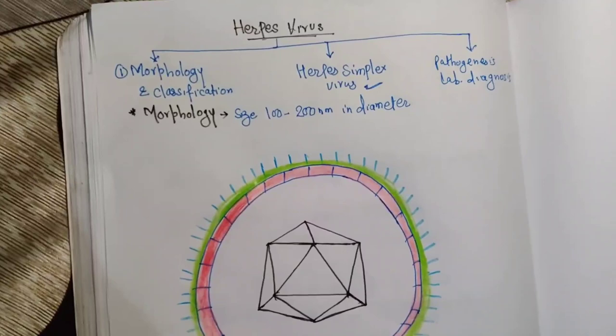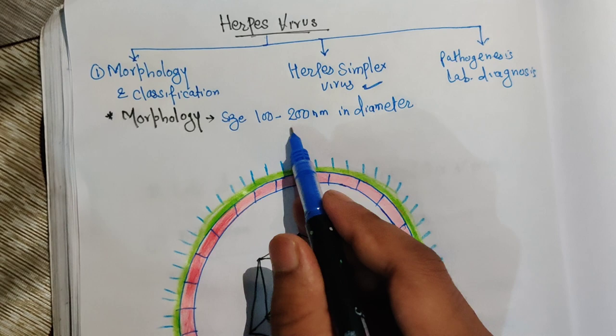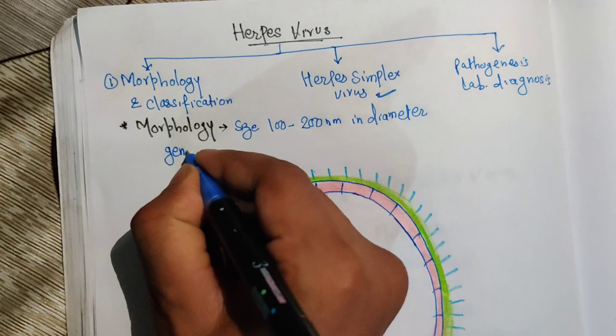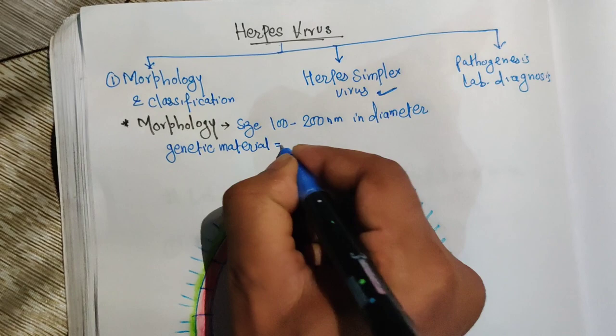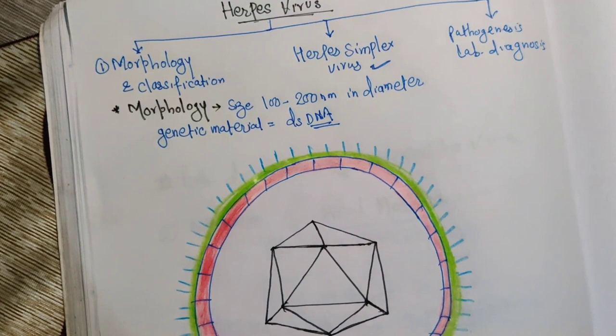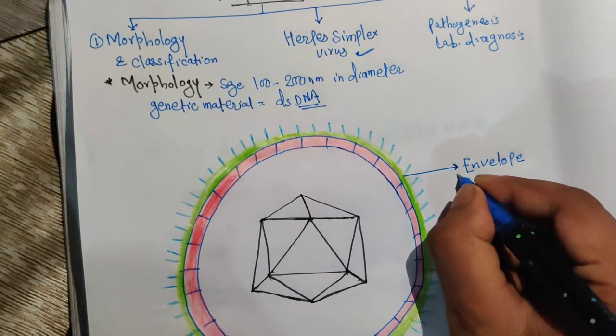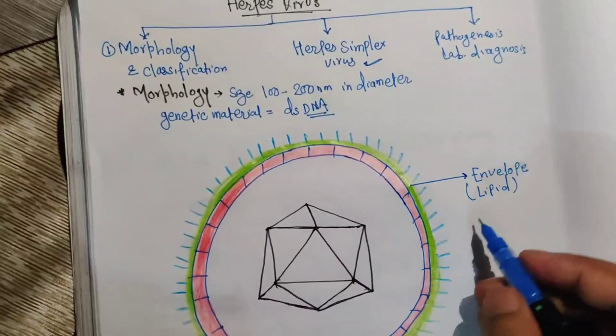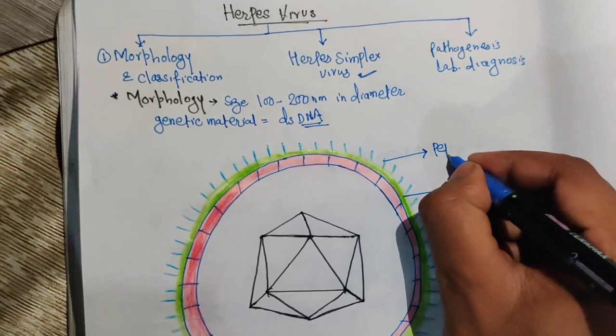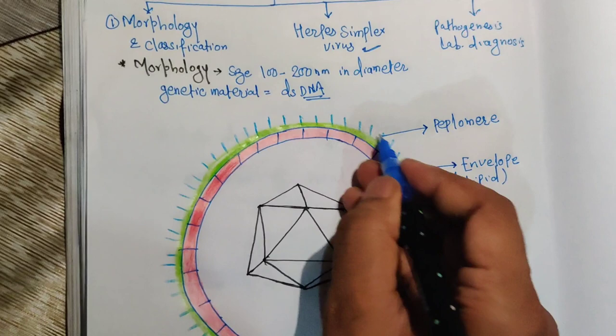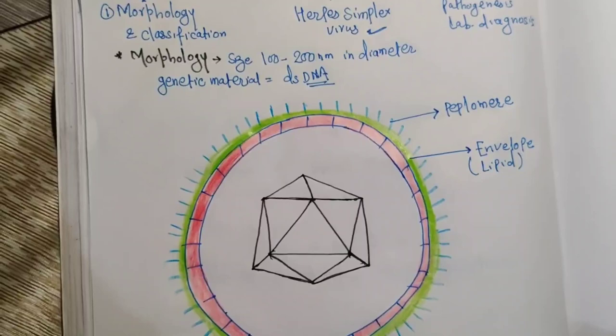The genetic material of herpes viruses is double-stranded DNA. These viruses are surrounded by an envelope, which is made up of lipid. The lipid envelope contains hair-like structures called peplomeres. Inside the envelope we have the capsid.